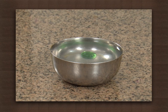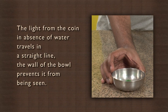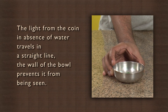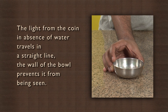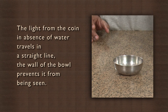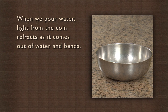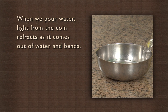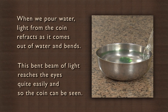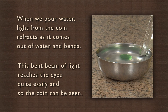So what happened? The light from the coin, in the absence of water, travels in a straight line. The wall of the bowl prevents it from being seen. When we pour water, the light from the coin refracts as it comes out of the water and bends. This bent beam of light reaches the eyes quite easily and so the coin can be seen.